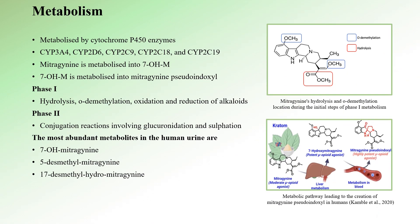The alkaloids in Kratom, including mitragynine, undergo primary metabolism in the liver, facilitated by the enzyme complex known as cytochrome P450. The primary enzymes involved are CYP3A4, CYP2D6, CYP2C9, CYP2C18, and CYP2C19. A small portion of mitragynine and other alkaloids is also metabolized by CYP3A4 in the intestine. Mitragynine is transformed into its more potent metabolite 7-hydroxymitragynine, with CYP3A4 playing the most significant role in this process.